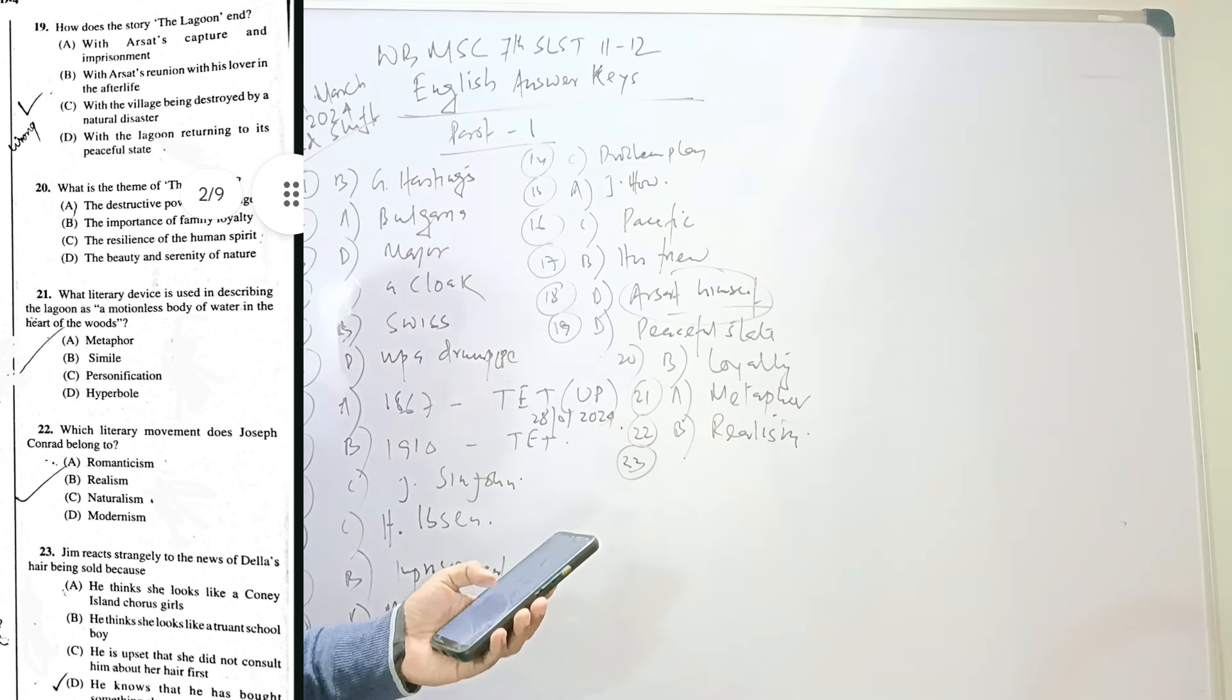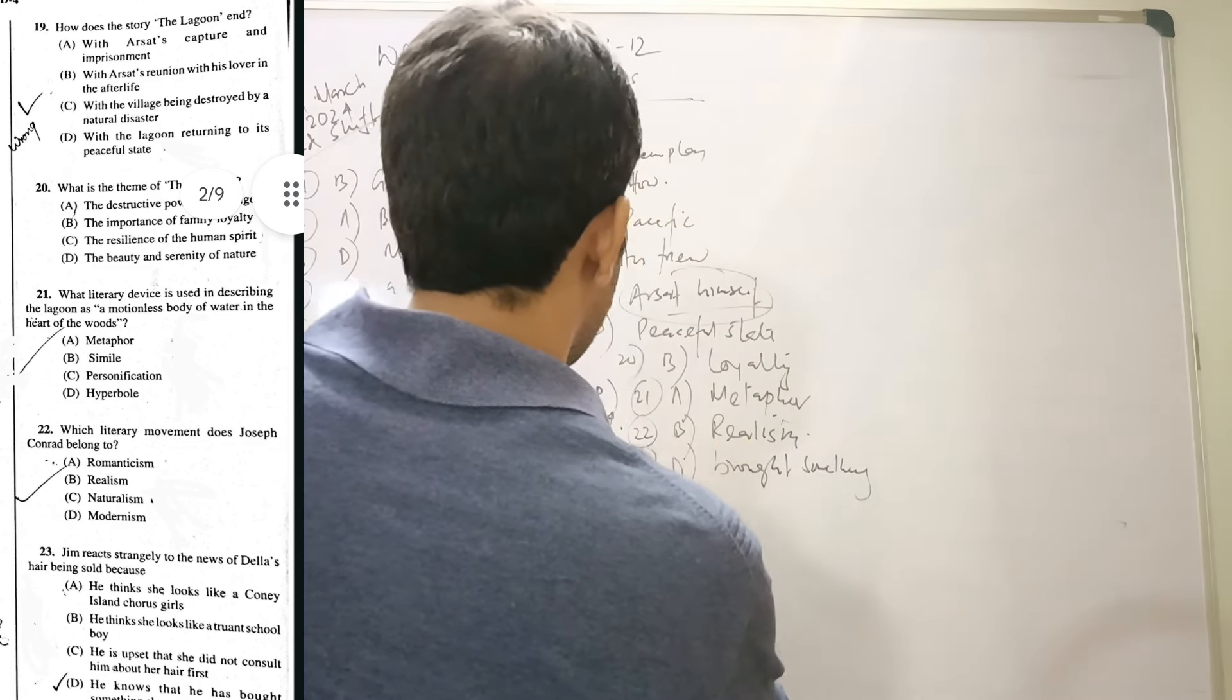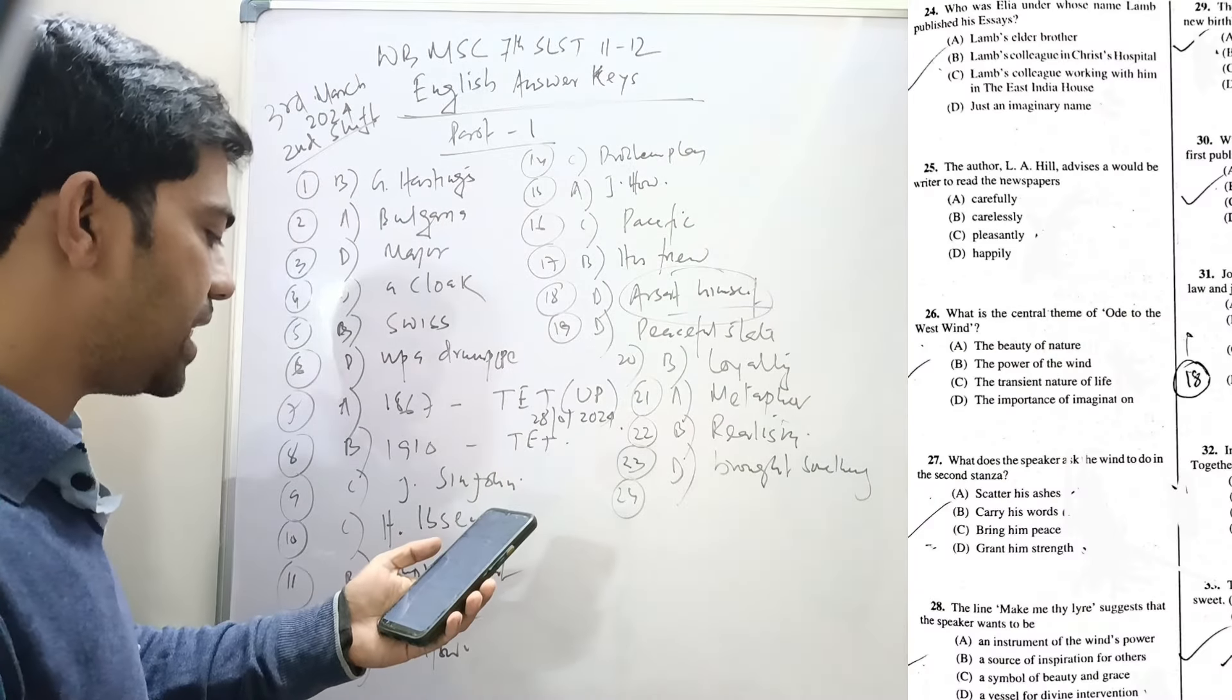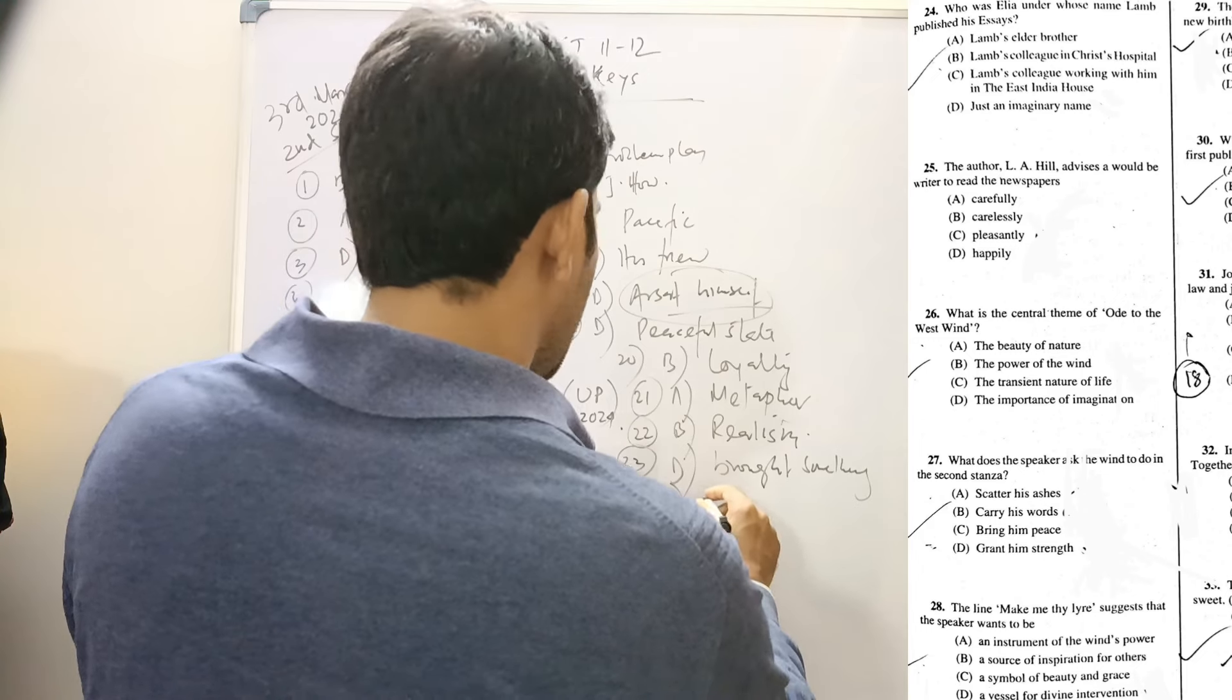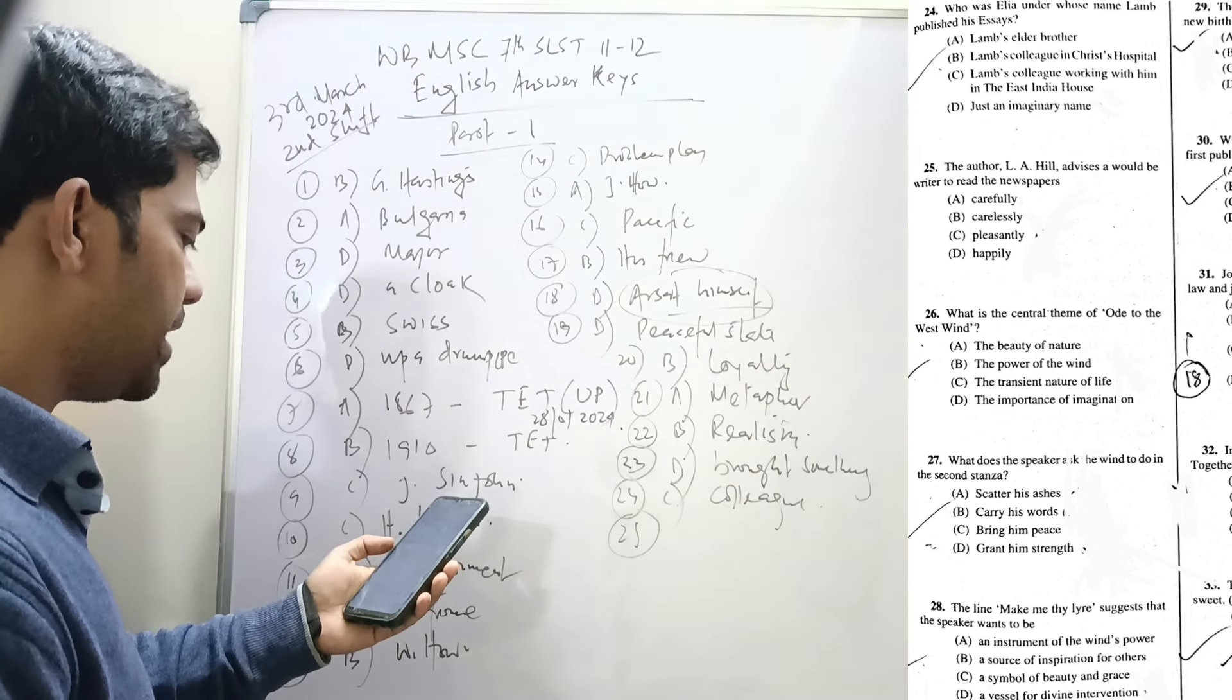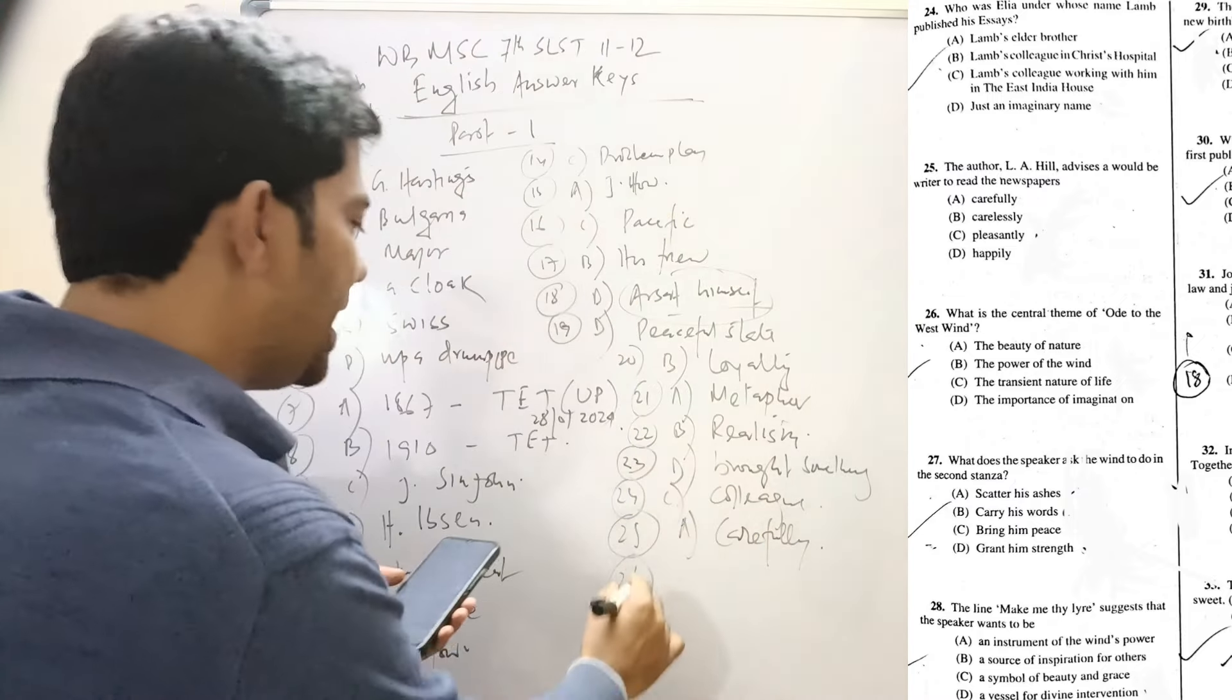Twenty-three: Jim reacts strangely to the news of Della's hair being sold. This is from The Gift of Magi. Twenty-four: Who was Elia under whose name Lamb published his essays? Elia was a colleague and friend of Charles Lamb's office at the East India Company, so C would be the correct answer. Twenty-five: The author LA Hill advised a would-be writer to read newspapers carefully. It is not from 11-12 syllabus, it is from 9-10 syllabus.